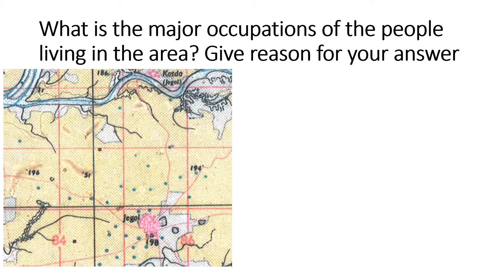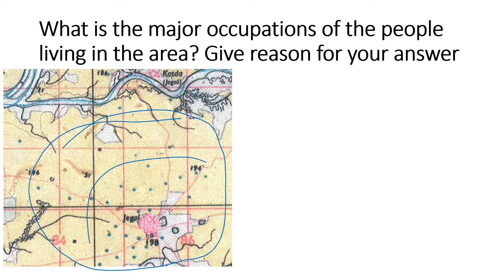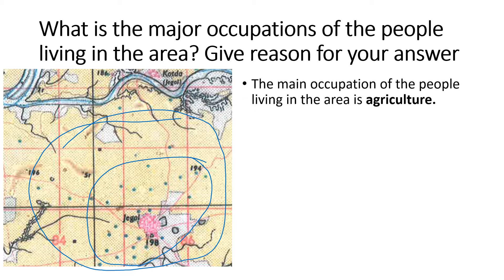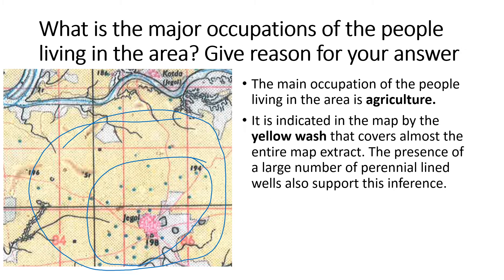Suppose a question comes: for Jagol, what is the major occupation of the people living in the area? Give reason for your answer. Around Jagol, we can see lots of yellow wash, which means agriculture is the main occupation. This is further inferred by a number of blue dots — perennial lined wells — which help in irrigation. So the answer is: the main occupation of the people living in Jagol is agriculture. It is indicated on the map by the yellow wash covering almost the entire map extract, and the presence of a large number of perennial lined wells also supports this inference.